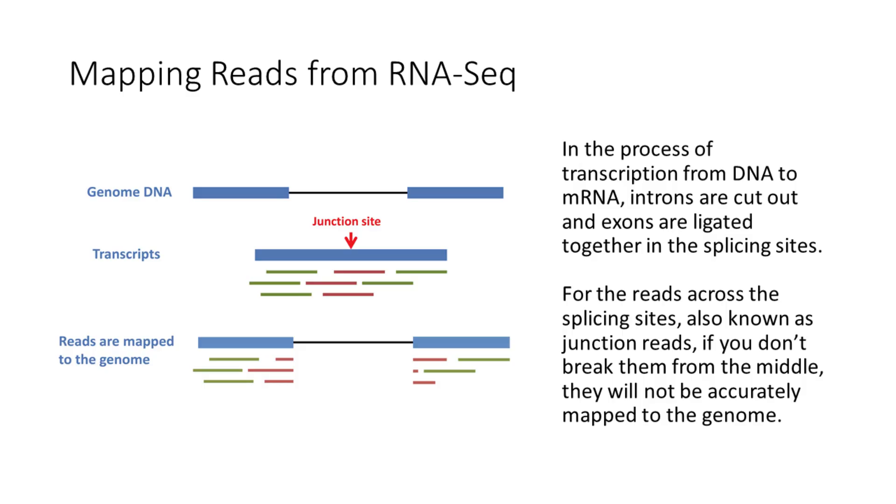However, RNA-Seq sequencing data also has its own characteristics because it's from the RNA transcript. Specifically, in the process of transcription from DNA to mRNA, introns are cut out and exons are ligated together in the splicing sites. For reads across the splicing sites, also known as junction reads, if you don't break them from the middle, they will not be accurately mapped to the genome.